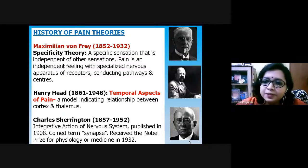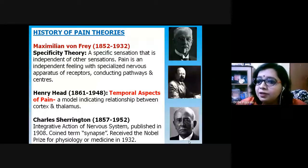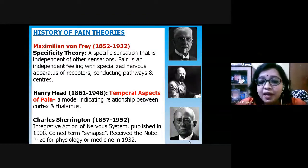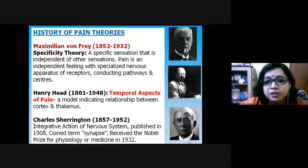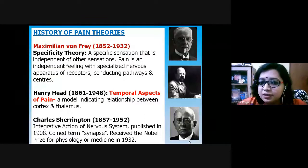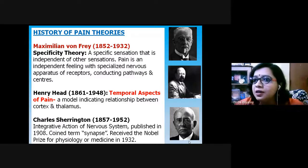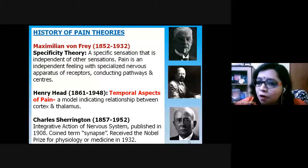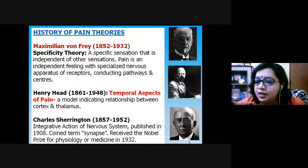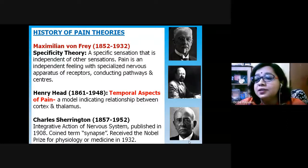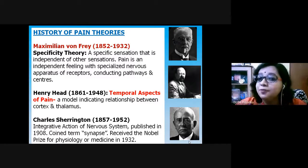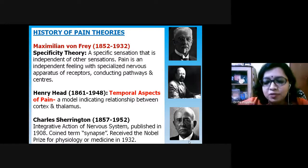Then came the neuroanatomical and temporal aspects of pain, given by Henry Head. He showed the relationship between the parietal cortex, temporal cortex, frontal cortex — the cerebral cortex — and the thalamus. The thalamus acts as an on-off switch: when switched on, triggers from the periphery reach the brain; when switched off, sensations do not register. The relationship between the cerebral cortex and thalamus is therefore very important.